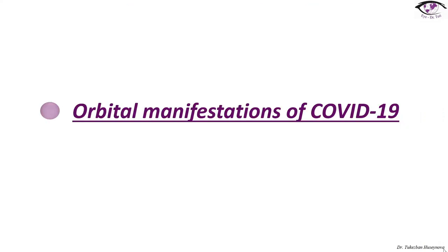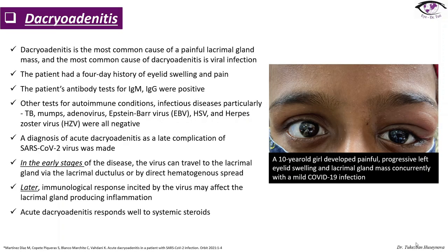Orbital manifestations of COVID-19. Dacrioadenitis is the most common cause of a painful lacrimal gland mass, and the most common cause of dacrioadenitis is viral infection. The patient had a 4-day history of eyelid swelling and pain; IgM and IgG antibody tests were positive and other autoimmune tests were negative. A diagnosis of acute dacrioadenitis as a late complication of SARS-CoV-2 was made. In early stages the virus can travel to the lacrimal gland via the lacrimal ductules or by hematogenous spread; later the immunological response may produce inflammation, and acute dacrioadenitis responds well to systemic steroids.